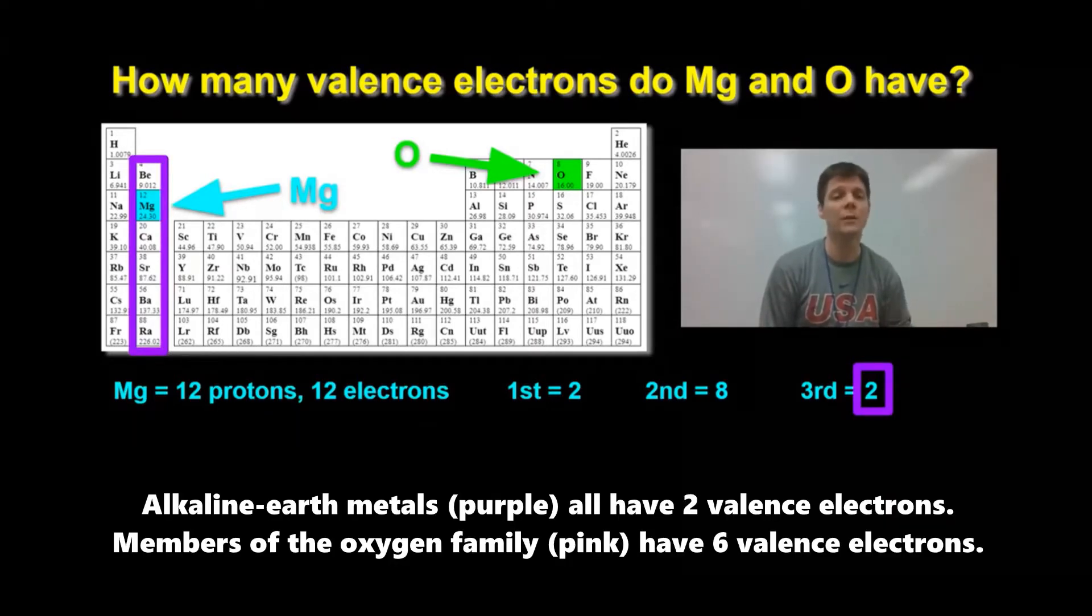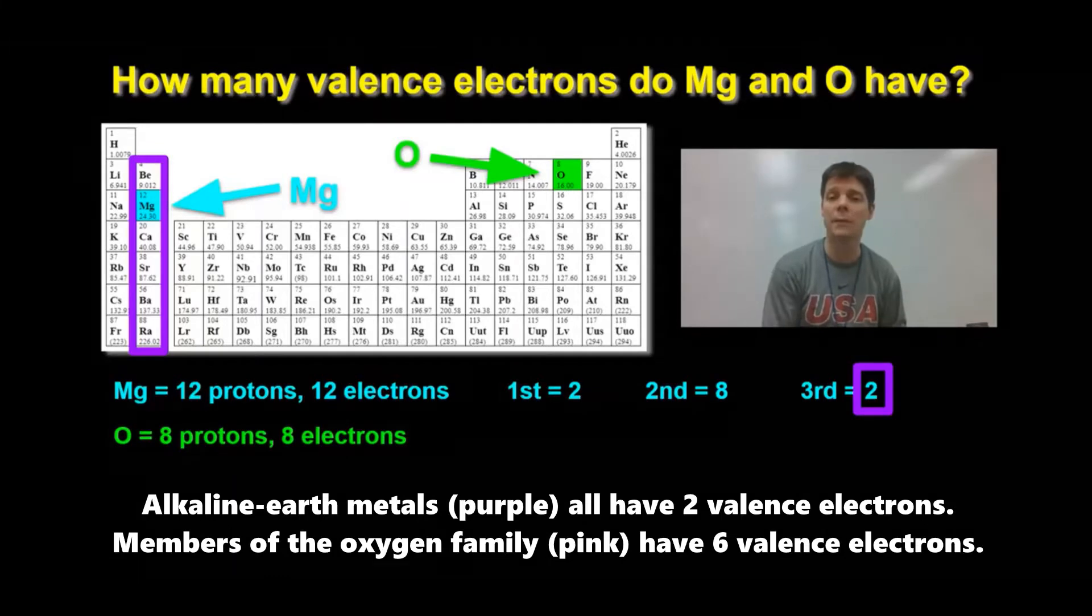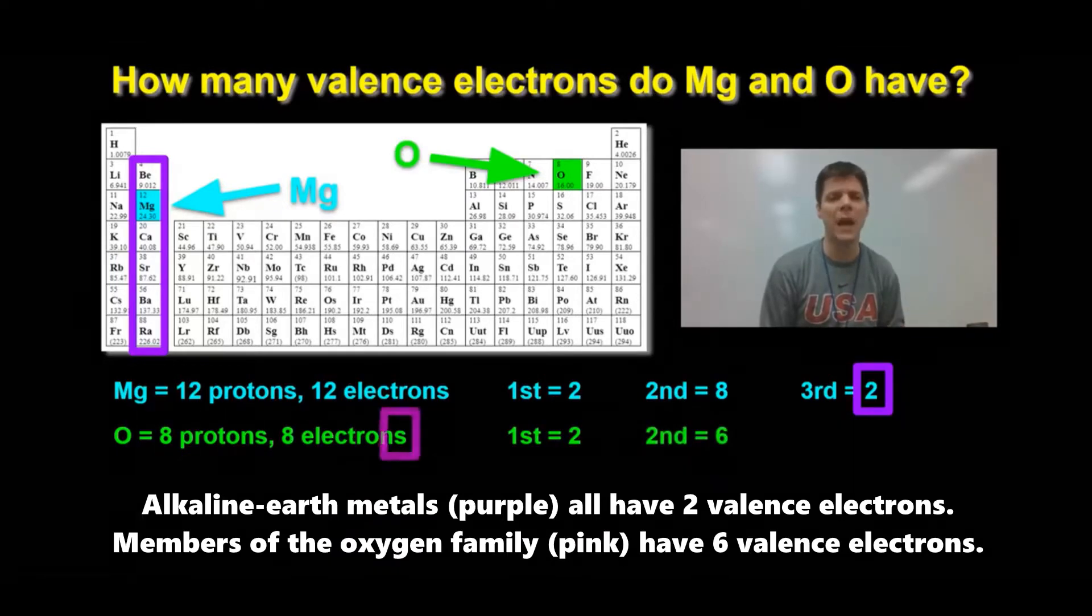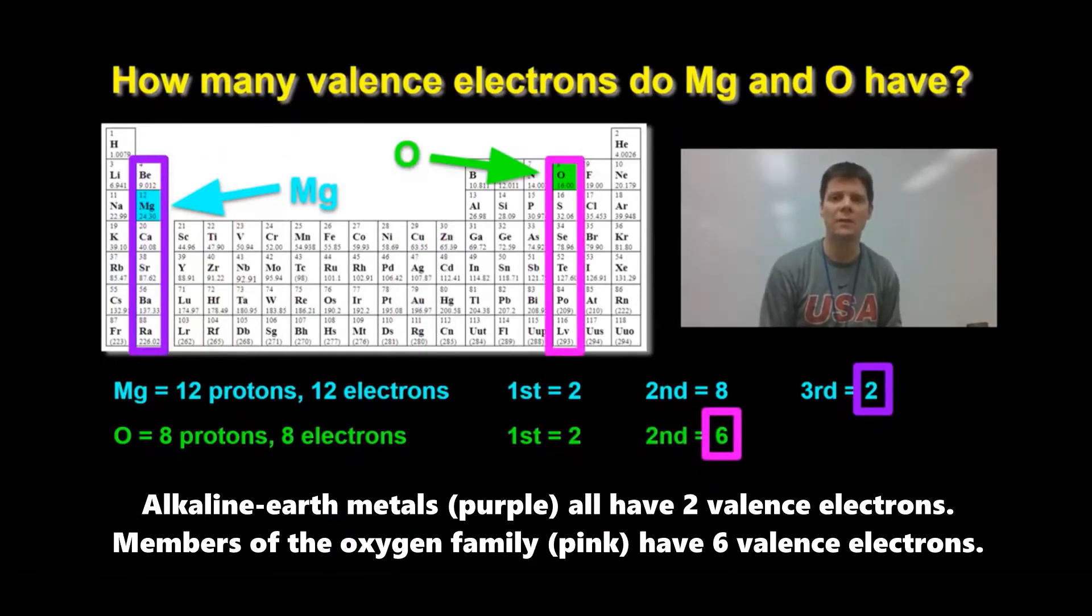For oxygen, there are electrons only in level 1 and level 2. The first energy level has 2 electrons. The second energy level has 6. This means that oxygen atoms have 6 valence electrons.